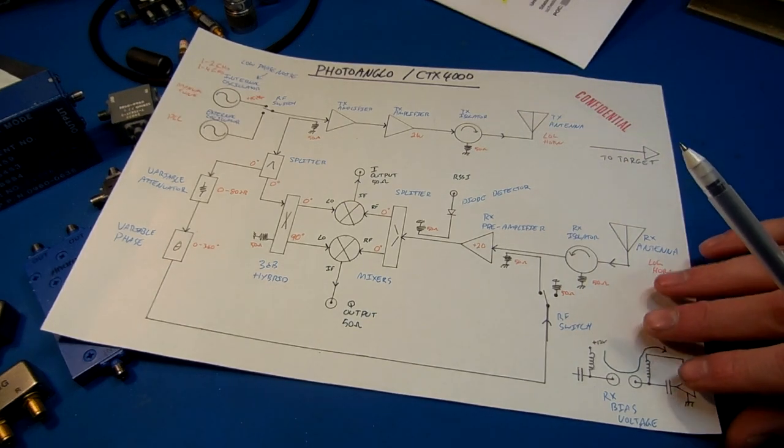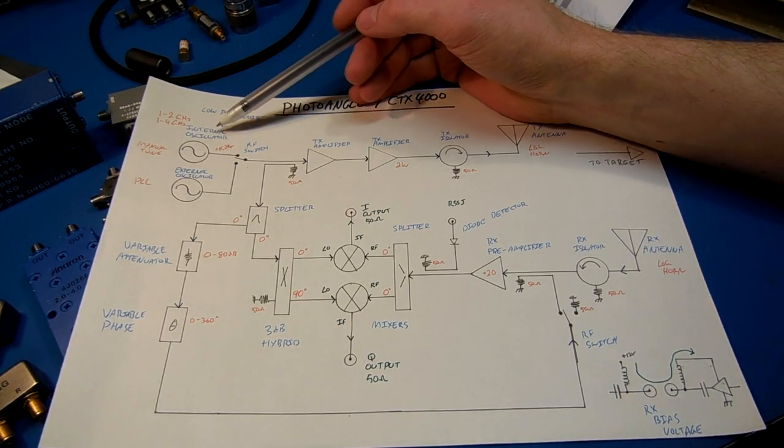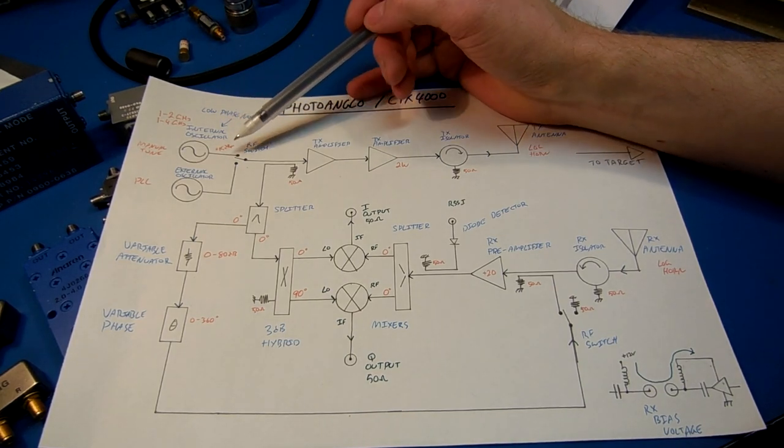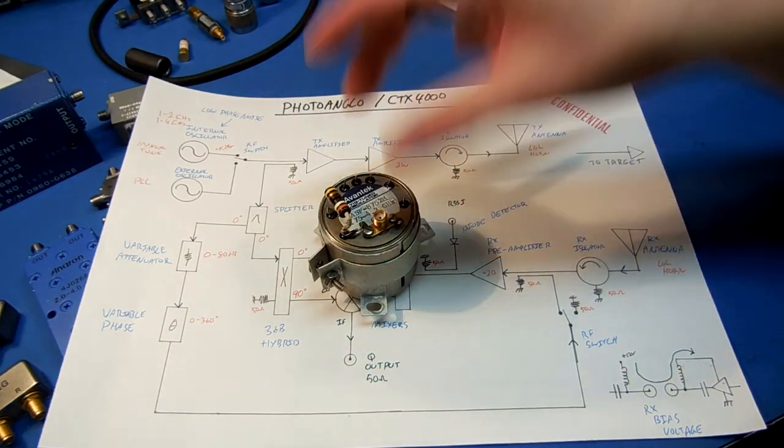There's a general block diagram. We have an internal oscillator. This is going to be a low phase noise oscillator. Most likely a Yig. It's a device that looks like that.